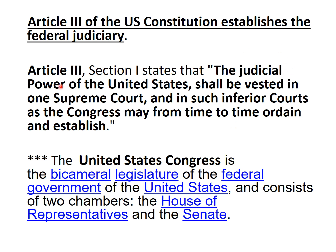First we need to know what is the origin of the judicial power of the United States. It is derived from Article 3 of the US Constitution. Article 3 states that the judicial power should be vested in one Supreme Court and in other inferior courts as the Congress may from time to time ordain and establish. So the judicial power is not only vested in the Supreme Court but also in courts that the Congress can establish from time to time.